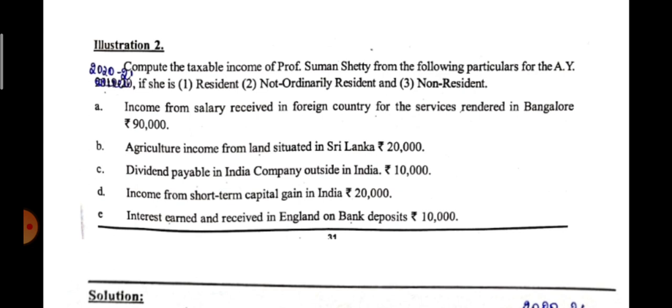In your fourth semester income tax, you will come across short-term capital gain and long-term capital gain. Point D: short-term capital gain earned in India. Since the income from short-term capital gain is earned in India, it is taxable in case of all three. You can assume it is also received in India. If the income is earned in India, taxable in case of all three; received in India also, taxable in case of all three. So show 20,000 in all three columns.